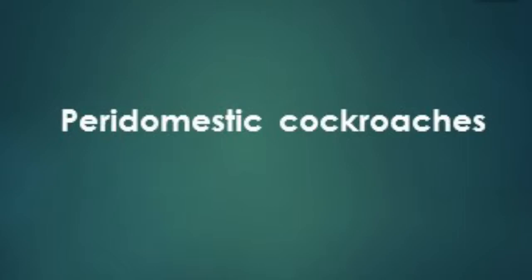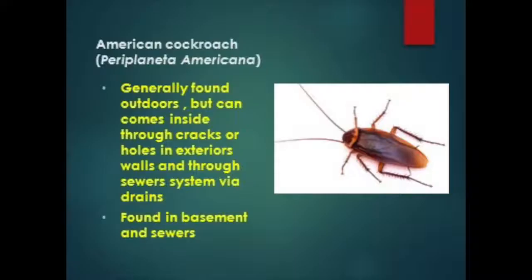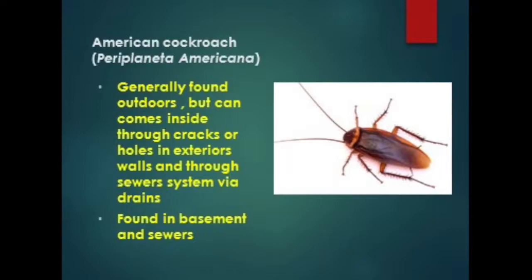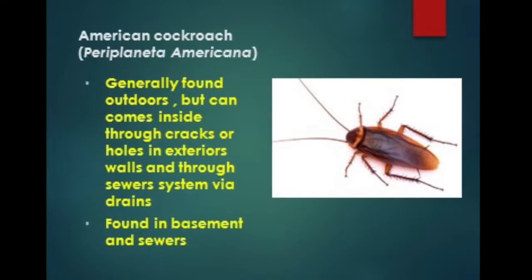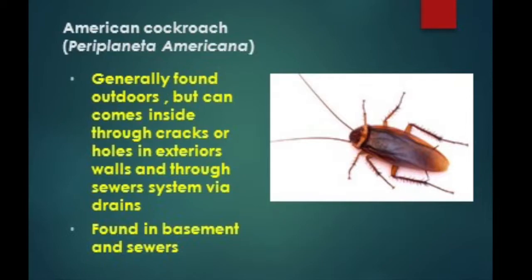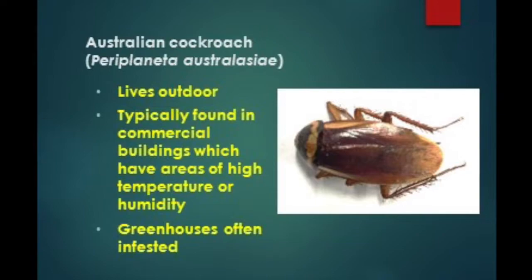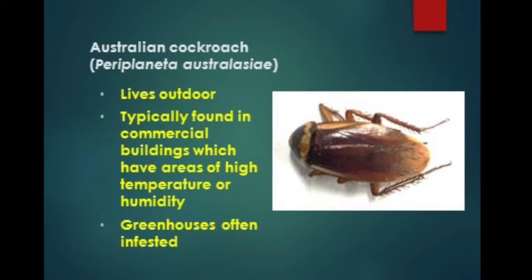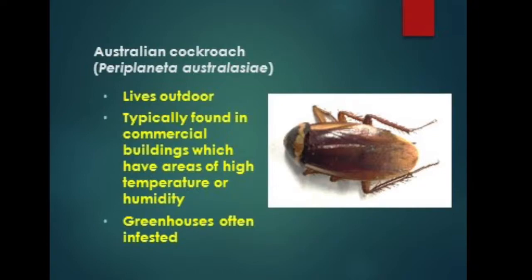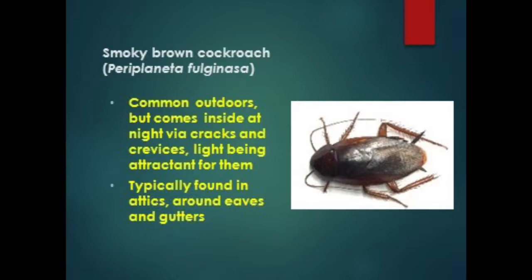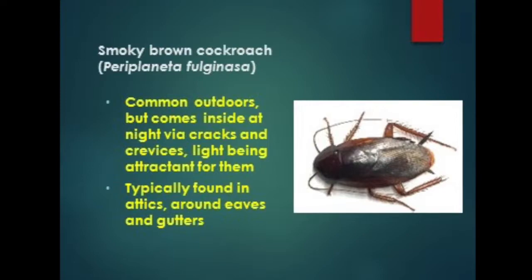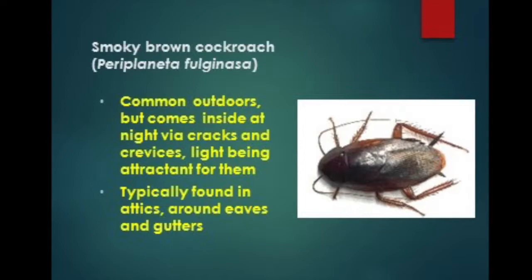Peridomestic cockroaches live both inside and outside, or move indoors only occasionally. The American cockroach is generally found outdoors but can come inside through cracks or holes in exterior walls and plumbing systems via drains, and can also be found in basements and sewers. The Australian cockroach lives outdoors and is typically found in commercial buildings with areas of high temperature or humidity. The smoky brown cockroach commonly lives outdoors but comes inside at night via cracks and crevices.